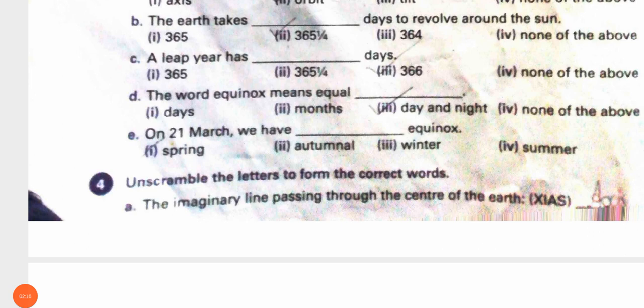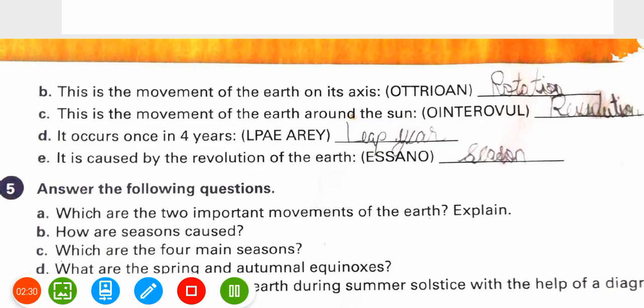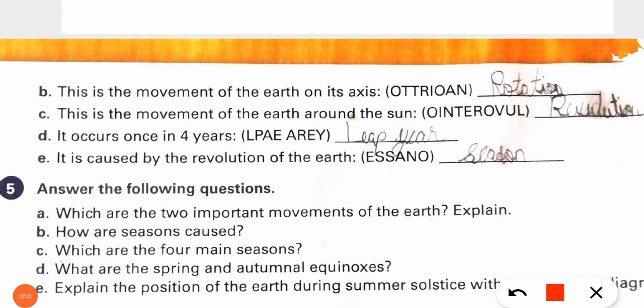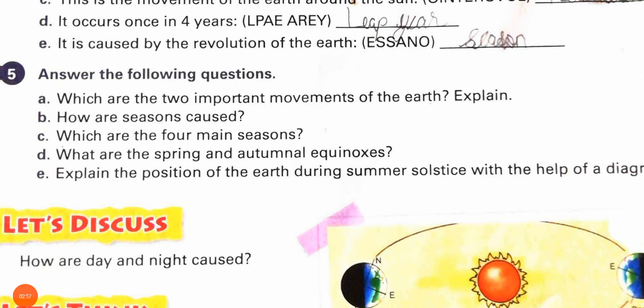Fourth exercise — unscramble the letters to form the correct words. First: the imaginary line passing through the center of the earth — axis. Second: this is the movement of the earth on its axis — rotation. Third: this is the movement of the earth around the sun — revolution. Fourth: it occurs once in every four years — leap year. Fifth: it is caused by the revolution of the earth — seasons. If you like this video, please like and subscribe.